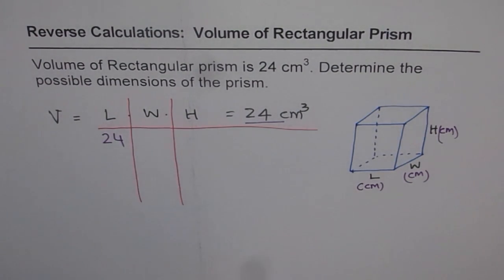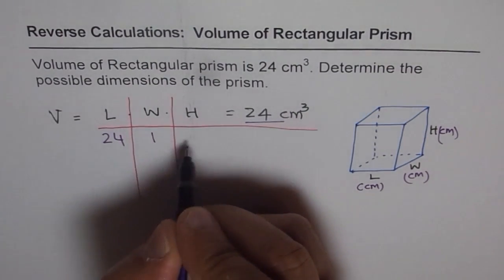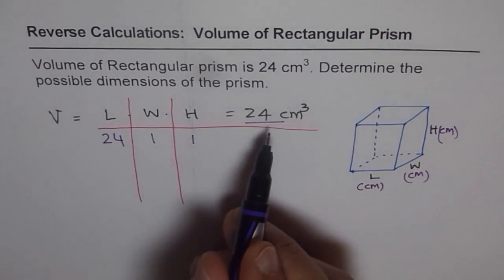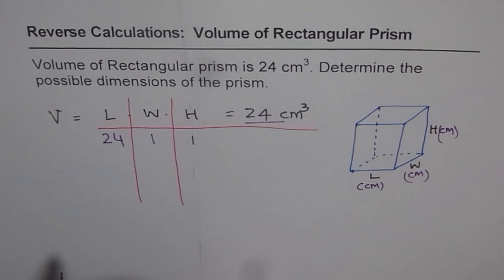If my length is 24, what could be width and height? Well, 24 times 1 is 24. So let's put one for each. If you multiply these three, you do get 24. And all these units are in centimeter, so it becomes 24 centimeter cube. I hope you like that trick. That's great.